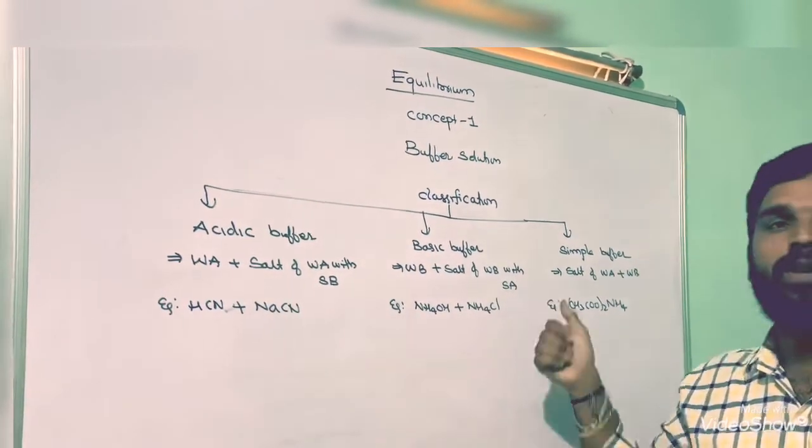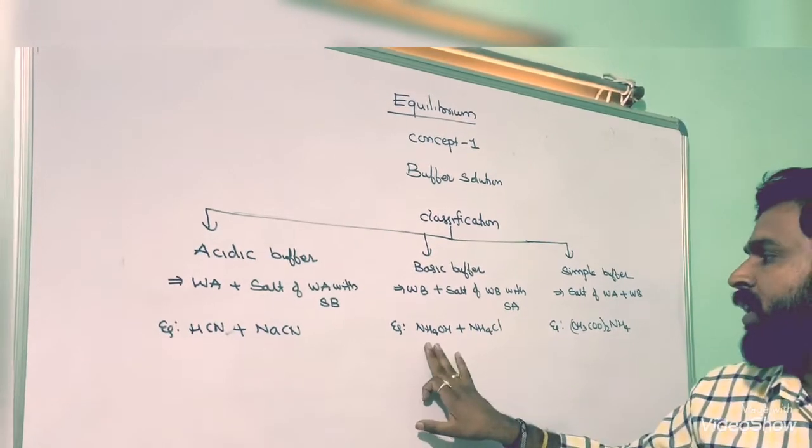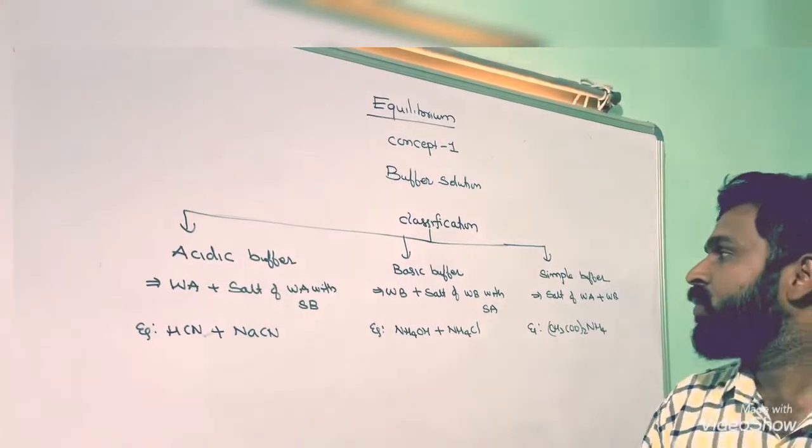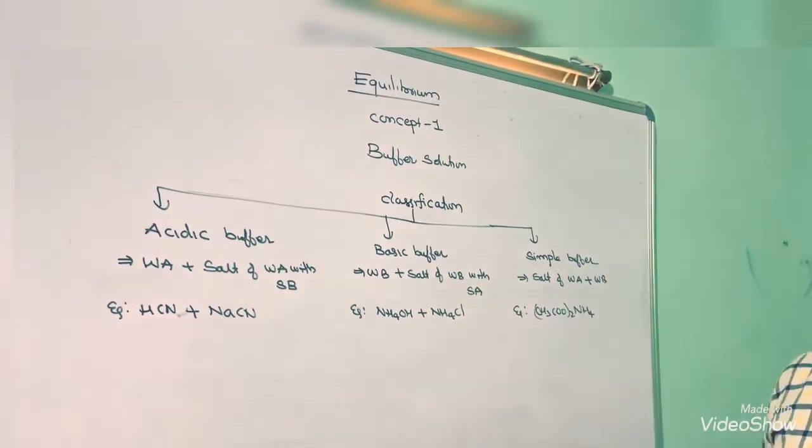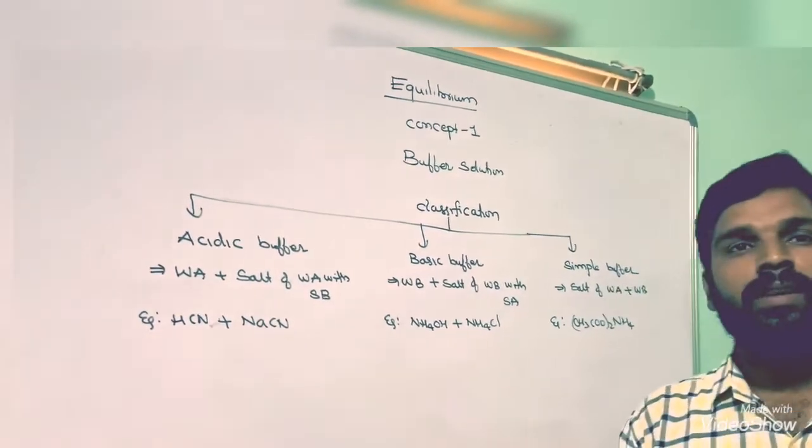weak base with a strong acid. Example: ammonium hydroxide and ammonium chloride. A simple buffer is a salt of weak acid and weak base.